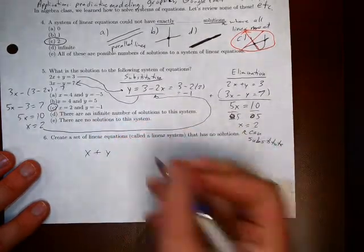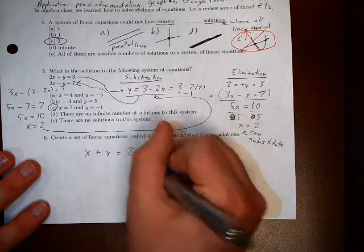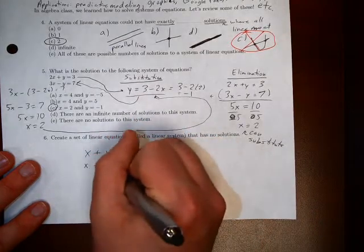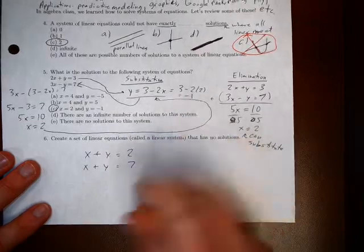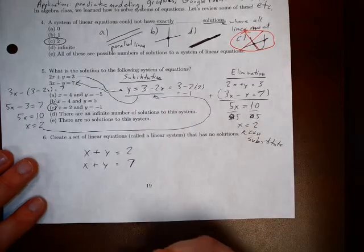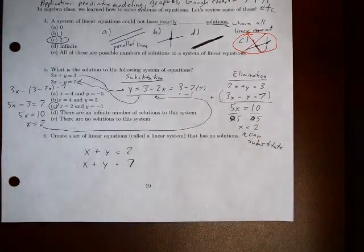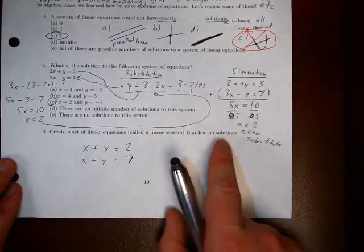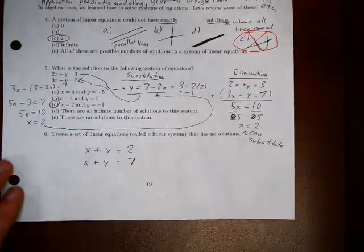So what we're going to do is let's look at two equations, x plus y, this is just an example, equals 2, and x plus y equals 7. Now can x plus y equal two different things at the same time? I think we all know that that can't happen. And so because of that, we end up with no solutions for this problem.